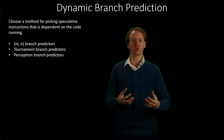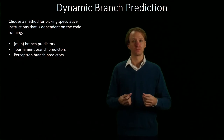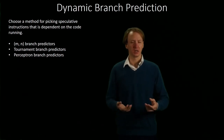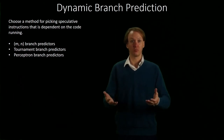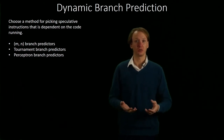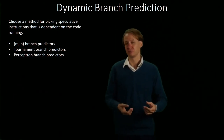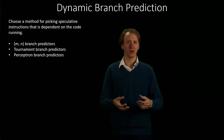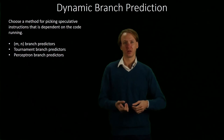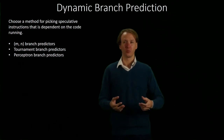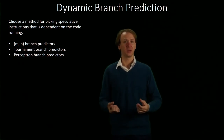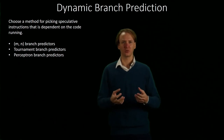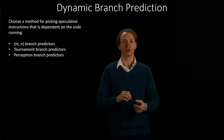Tournament branch predictors have a few options. They could choose to select one of those MN branch predictors, a global branch predictor, or potentially a static branch predictor, depending on which instruction is running. The idea is that one of these methods may be better for a given instruction than another, and we'll try to pick the one that works best for that branch in particular.